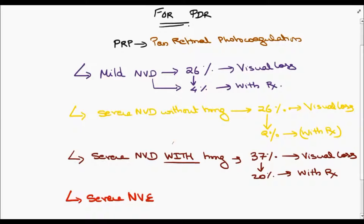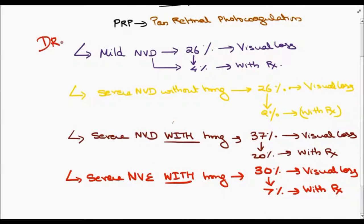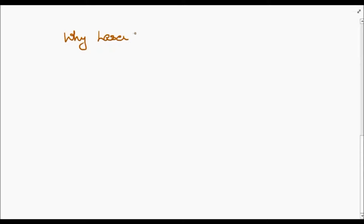Those patients who have neovascularization elsewhere with hemorrhage have 30% chance of visual loss, and this reduces to 7% with treatment. This is given by ETDRS.